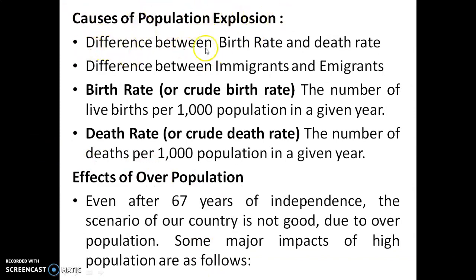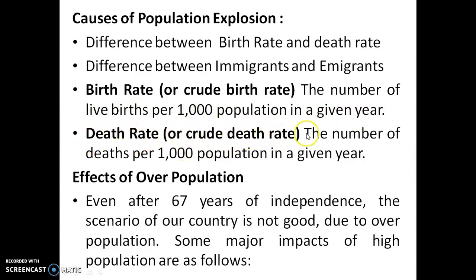Population growth rate is the difference between birth rate and death rate, and the difference between immigrants and emigrants. Birth rate, or crude birth rate, is the number of live births per thousand population in a given year. Death rate, or crude death rate, is the number of deaths per thousand population in a given year.